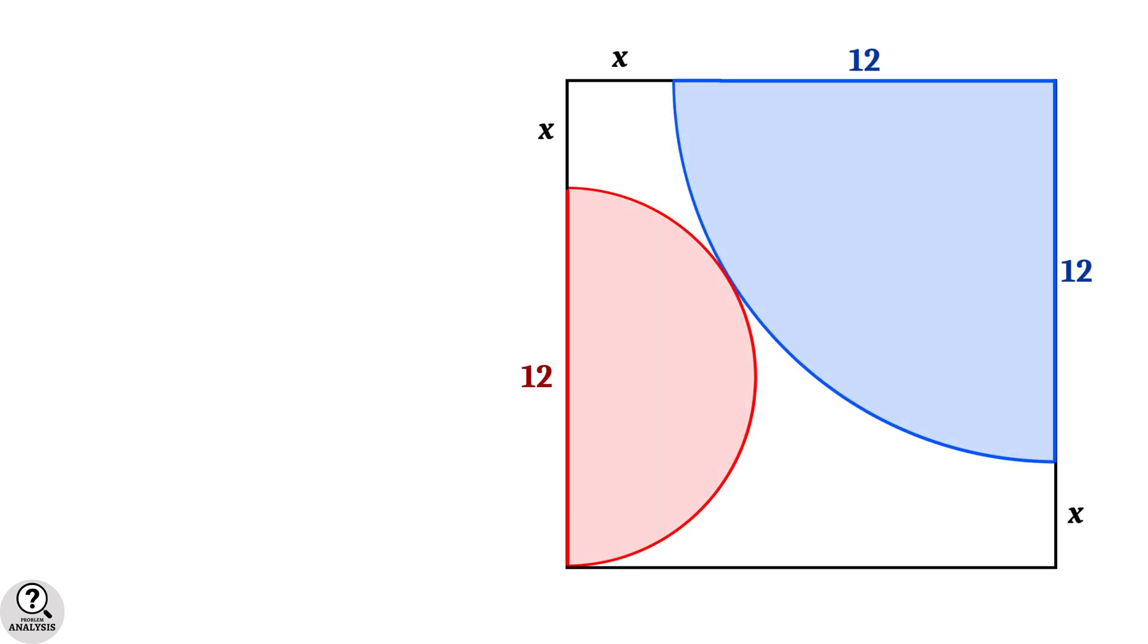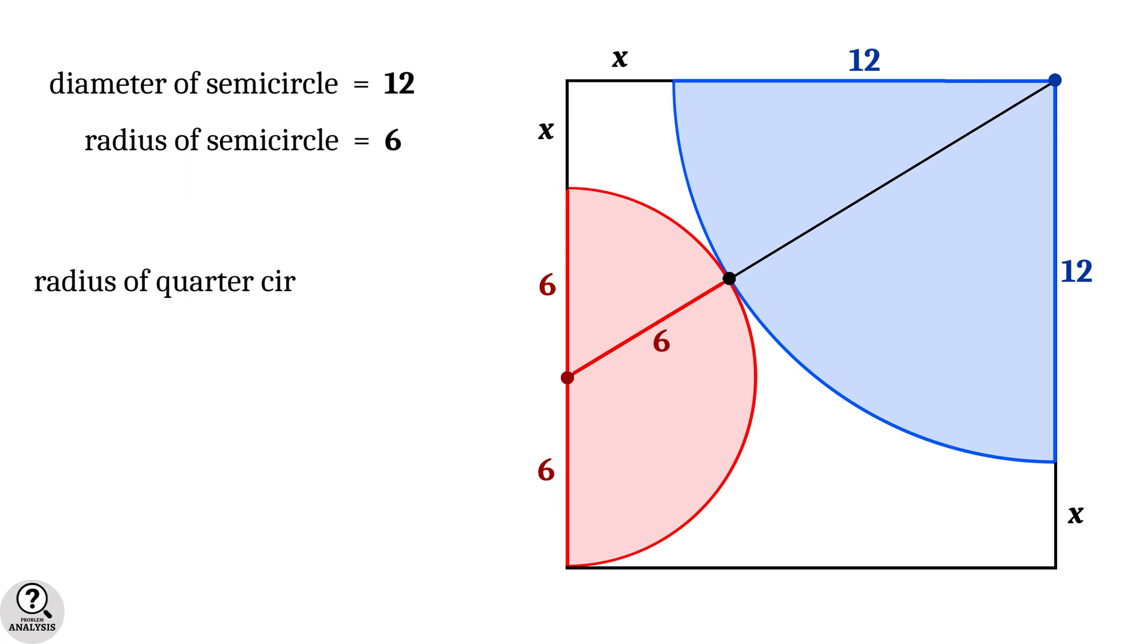Now come back to our problem and mark the centers of the semicircle and quarter circle, and their touching point. By the property we discussed, these three points can be joined using a single line. The diameter of the semicircle is 12 units, so the radius is 6 units. Similarly, the quarter circle has radius equal to 12 units.